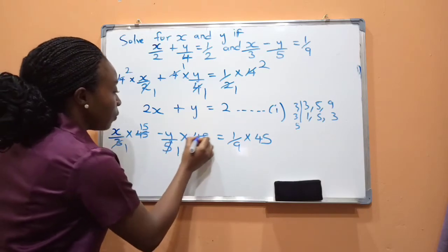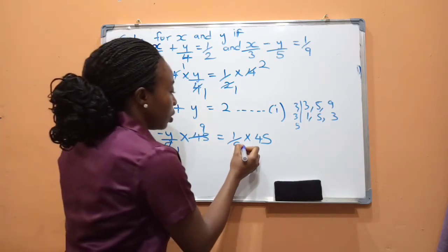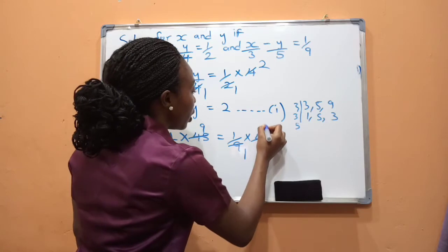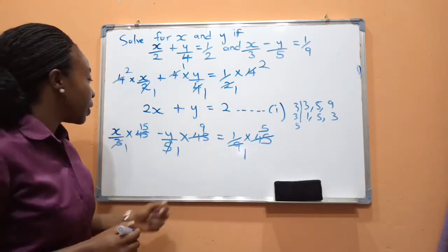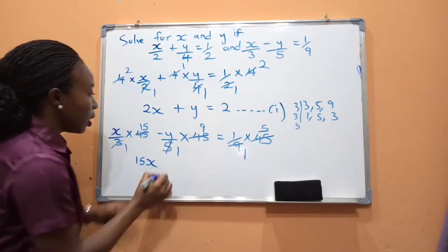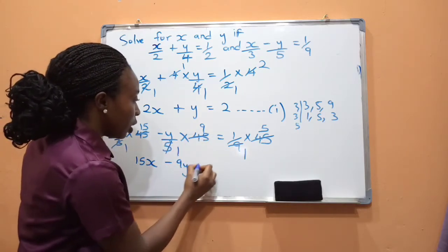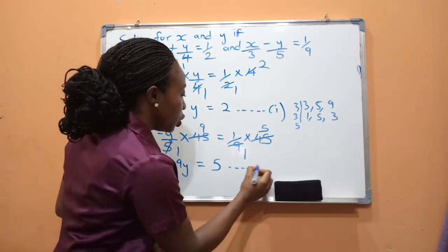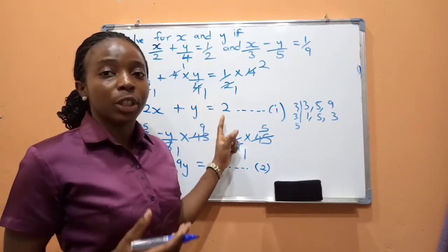Simplifying: 45÷3 = 15, 45÷5 = 9, 45÷9 = 5. We have succeeded in eliminating the denominator. Expressing it out: 15x − 9y = 5. This is equation 2. Now that we have both equations in standard form, we can solve using the elimination method.